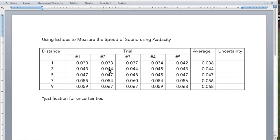In this video, I'm going to show you how to analyze the data for IB physics. On my screen, you can see I have some data. It came from using echoes to measure the speed of sound using Audacity, and that's how we've got these times to be so accurate.